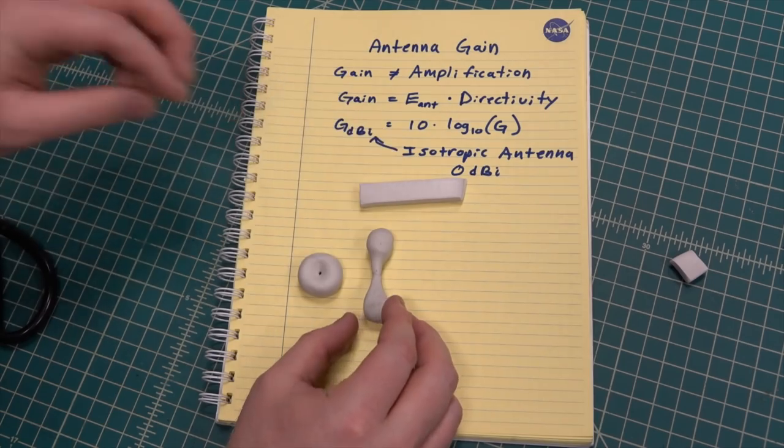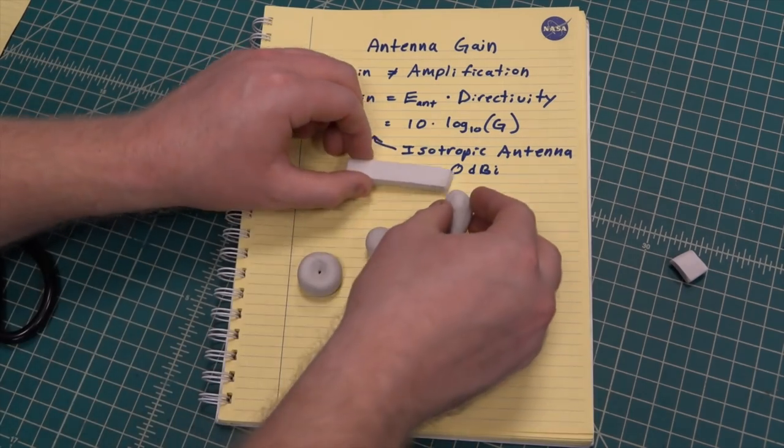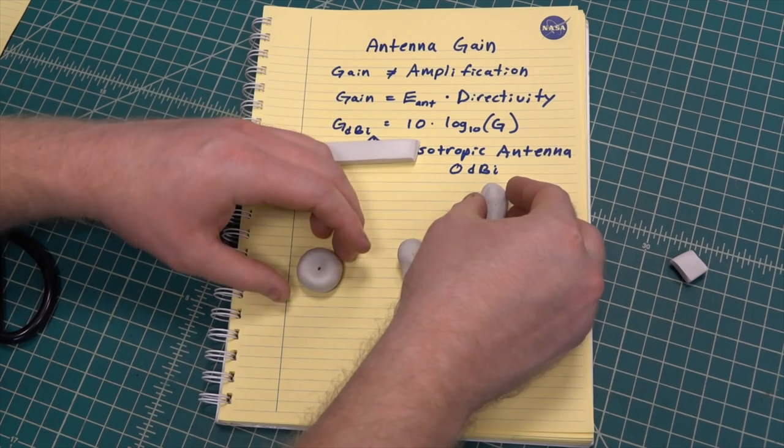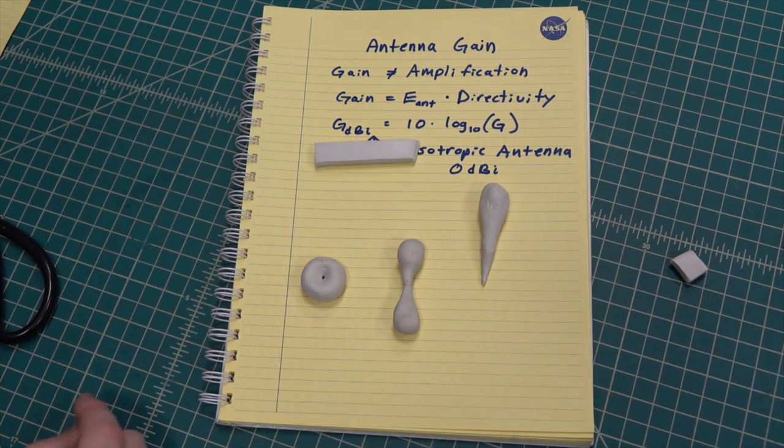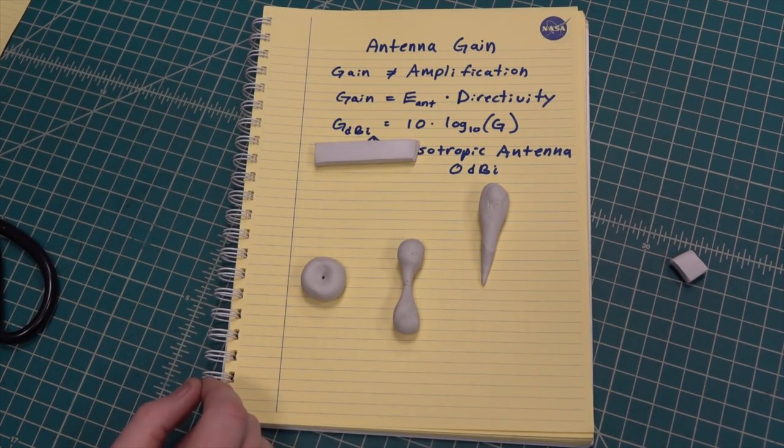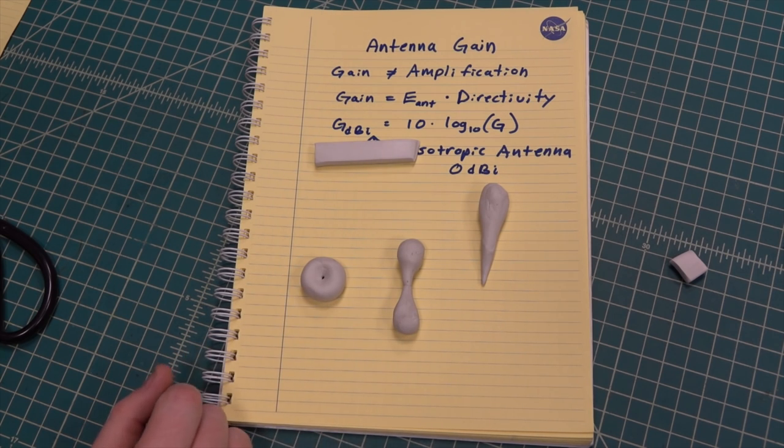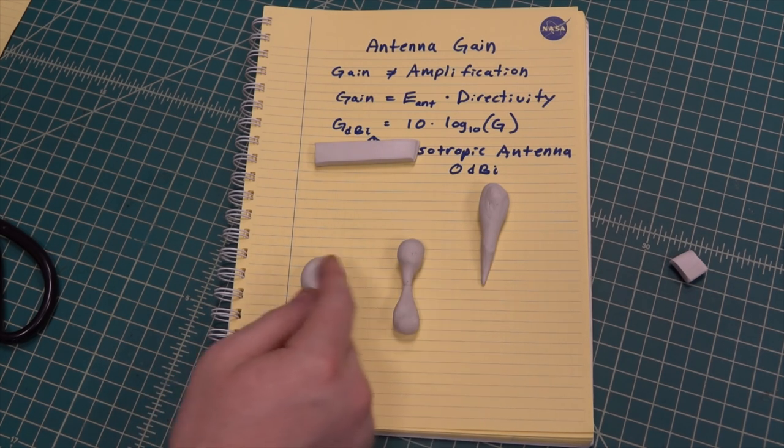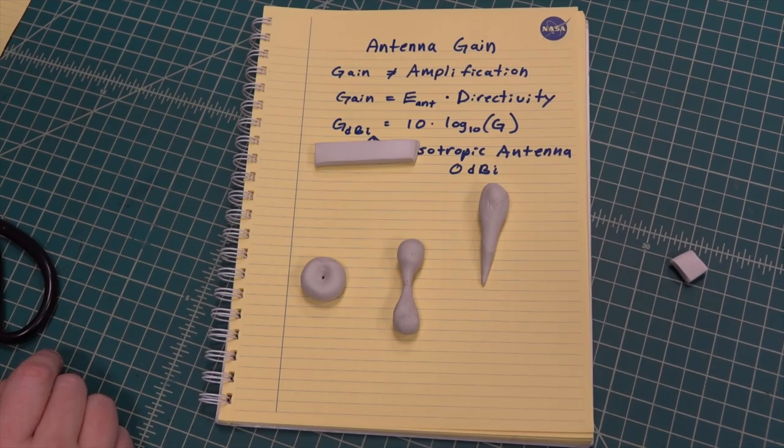The middle antenna radiates most of its energy in two directions and has a higher max gain than the dipole. The antenna on the right has the largest max gain of these three antennas so it can reach the farthest distance but only in one direction. If you want to reach longer distances you'll either have to increase the antenna's efficiency or increase the power of the transmitter.